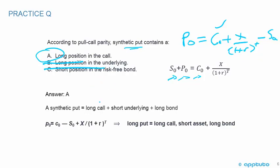Sometimes candidates find put-call parity intimidating when they see the list of formulas. But if you just memorize S0 plus P0 equals C0 plus X over (1 plus R) to the T, get any question like this, rearrange it, match the words to the formula — plus is long, minus is short — these questions become really easy.